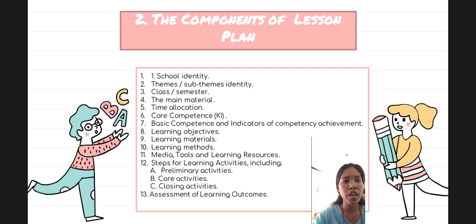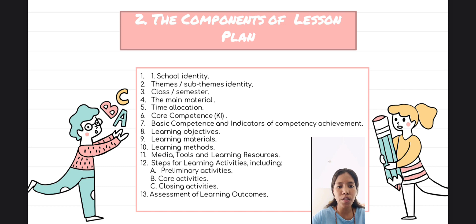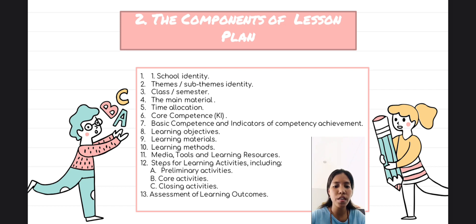Number six: core competence, which is a categorical description of competence in the aspect of attitudes, knowledge, and skill that students must learn for a school level, class, and subject. Number seven: basic competencies and competency achievement indicators. Basic competencies consist of three parts related to attitude, knowledge, and skill related to the subject matter.